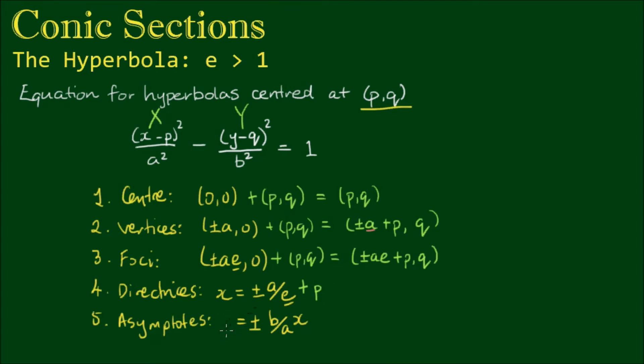And the asymptotes - well y becomes capital Y and the x becomes capital X. So the equation is y - q = ±(b/a)(x - p). And if we make y the subject, we get y = q ± (b/a)(x - p).